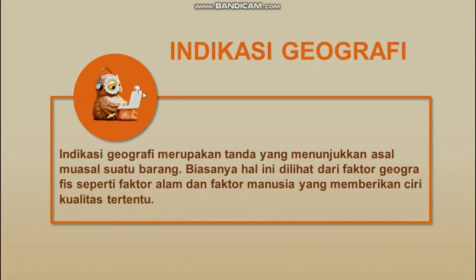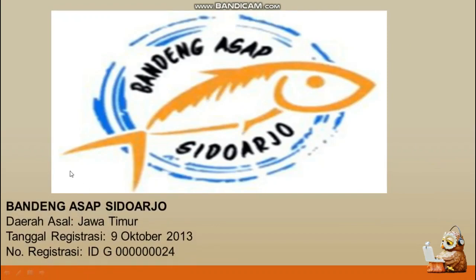Yang terakhir tentang hak kekayaan industri adalah indikasi geografi. Definisi dari indikasi geografi merupakan tanda yang menunjukkan asal-muasal suatu barang, biasanya dilihat dari faktor geografis seperti faktor alam dan juga faktor manusia yang memberikan ciri kualitas tertentu. Contohnya tentang kearifan lokal di daerah Sidoarjo, di mana Sidoarjo dikenal dengan penghasil bandeng yang paling enak, terkenal dengan rasa bandengnya yang memang khas karena pengaruh letak geografis — tanahnya itulah yang membedakan rasa bandeng dari Sidoarjo dengan yang lainnya. Bandeng asaf Sidoarjo itu berasal dari Jawa Timur, sudah didaftarkan dengan tanggal registrasi 9 Oktober 2013 dan nomor registrasi ID G 0000 000024.